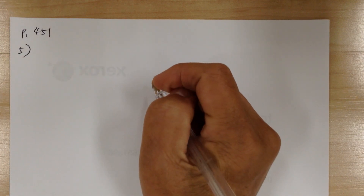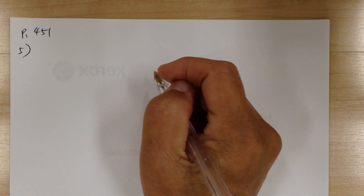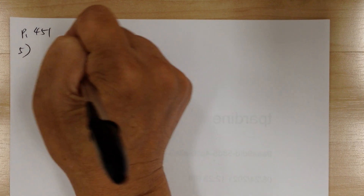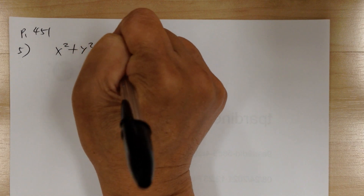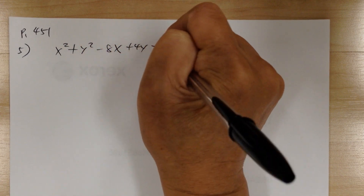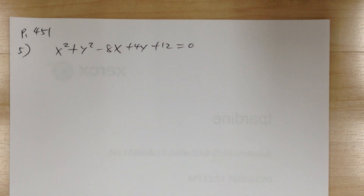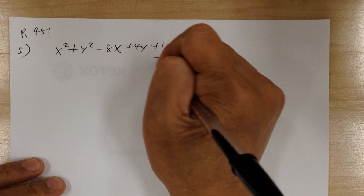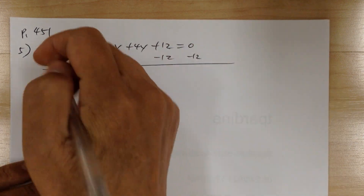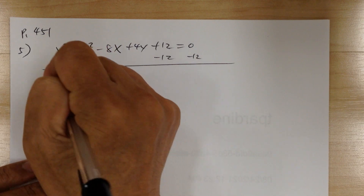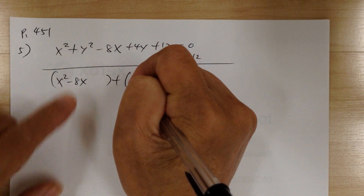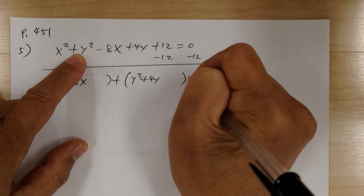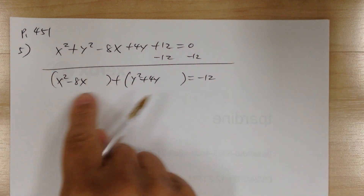Number 5, find the center and radius of the circle. You have x squared plus y squared minus 8x plus 4y plus 12 equals 0. You need to put the equation in center-radius form by completing the square. First, get rid of the constant — minus 12 — and group your variables: x squared minus 8x, and y squared plus 4y, equals negative 12.